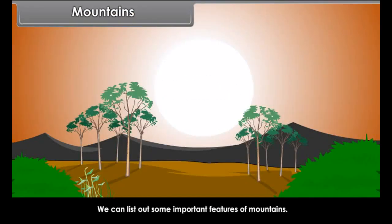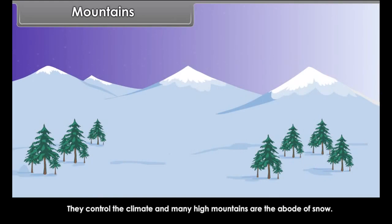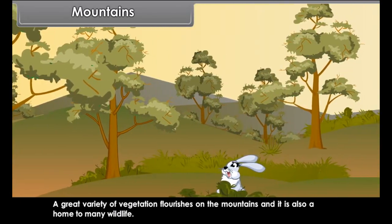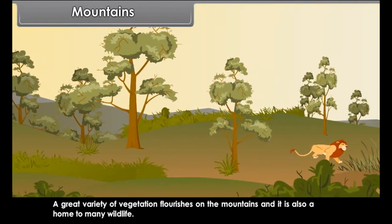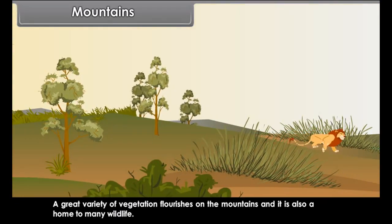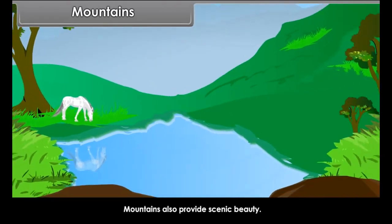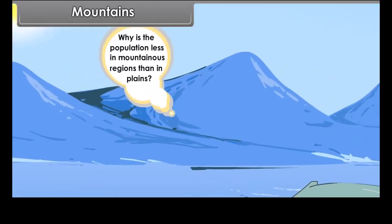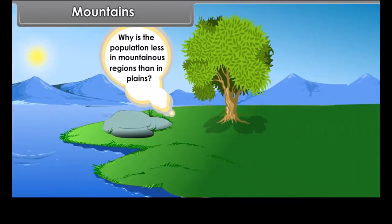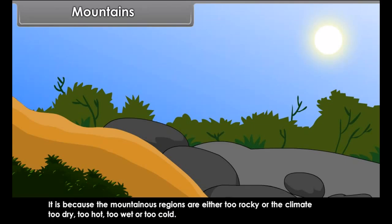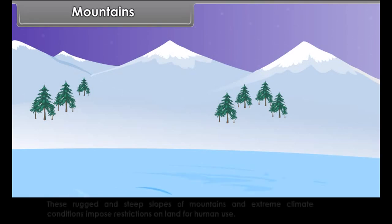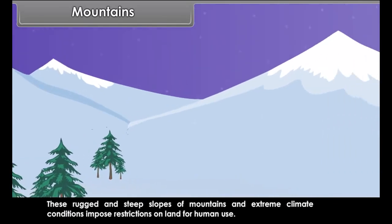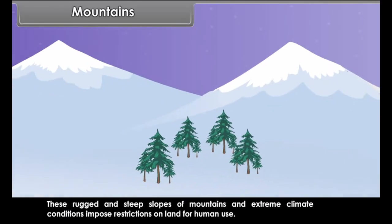Mountains. We can list out some important features of mountains. They control the climate and many high mountains are the abode of snow. A great variety of vegetation flourishes on the mountains and it is also home to many wildlife. Mountains also provide scenic beauty. Why is the population less in mountainous regions than in plains? It is because the mountainous regions are either too rocky or the climate is too dry, too hot, too wet or too cold. These rugged and steep slopes and extreme climate conditions impose restrictions on land for human use.